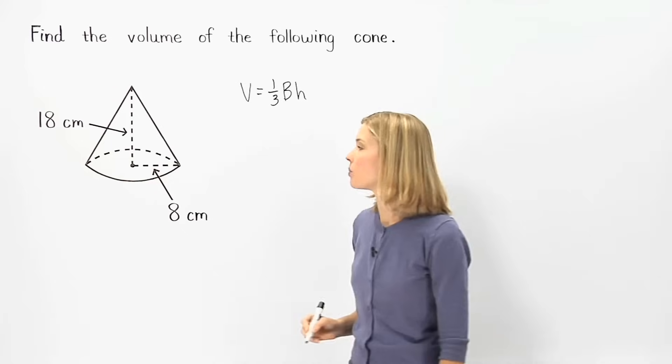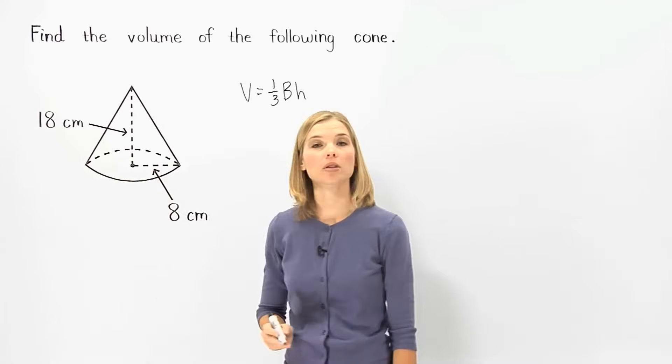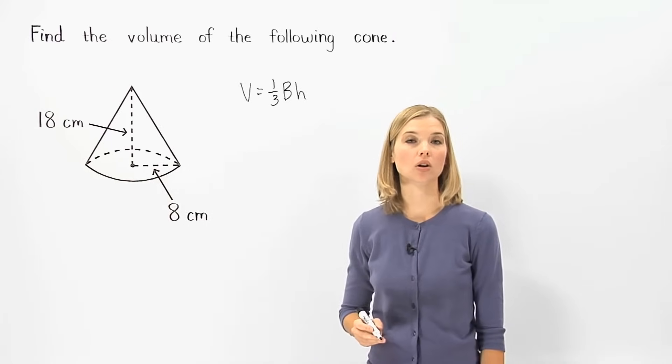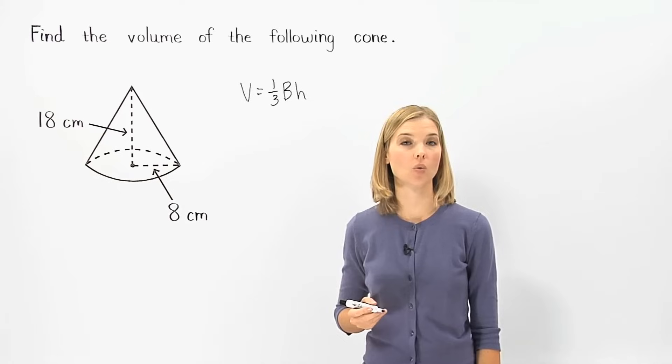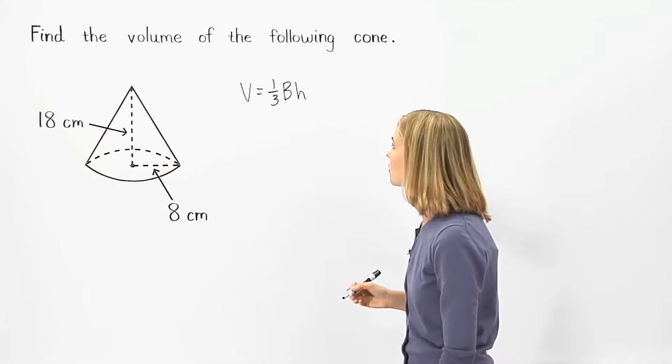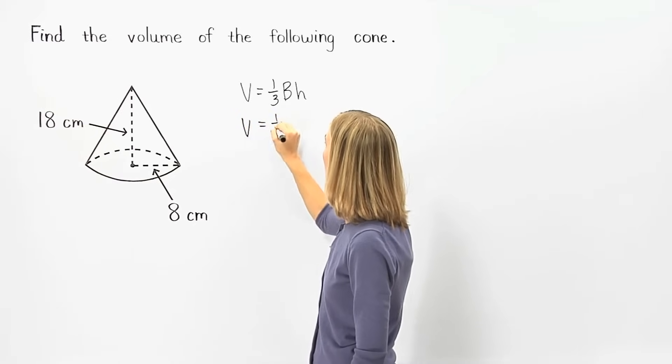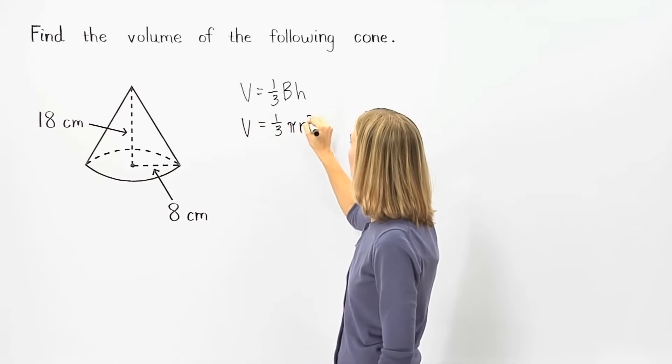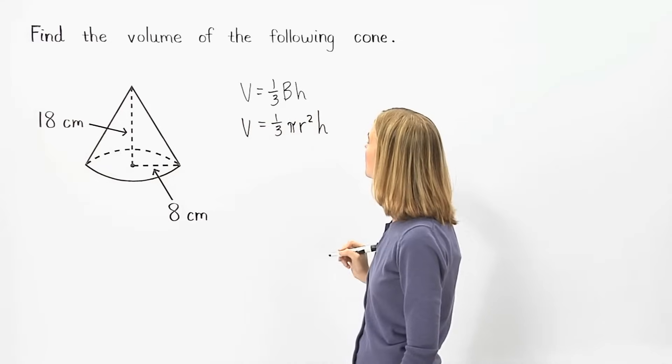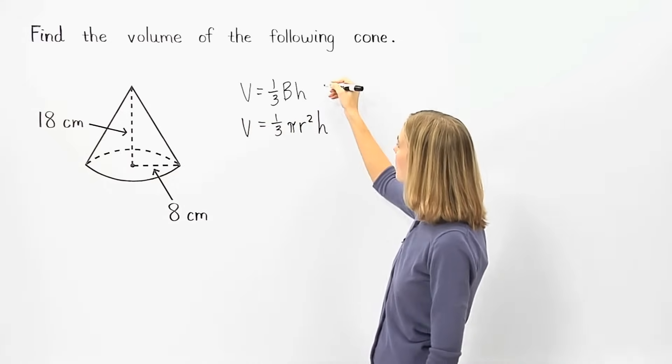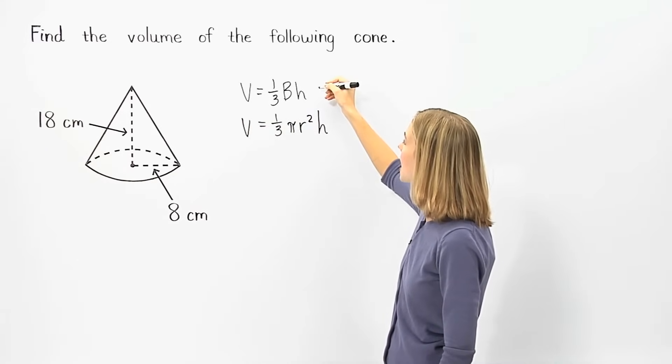Notice, however, that the base of a cone is a circle. And remember that the formula for the area of a circle is pi times radius squared. So another way to write the formula for the volume of a cone is volume equals one-third times pi times radius squared times height, which is the same thing as one-third times area of the base times height.